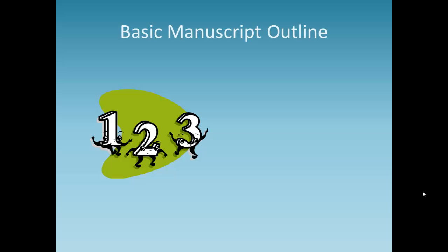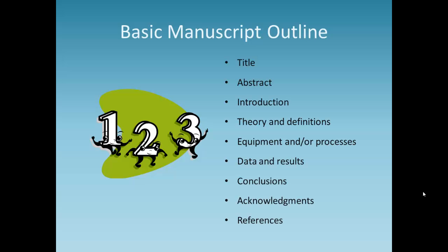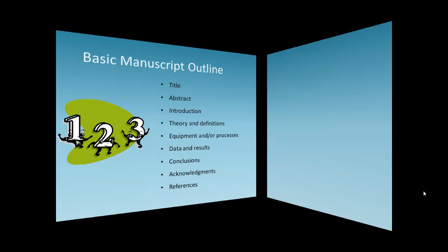A basic manuscript outline is another important part of planning your conference or journal paper. In your outline, you need to lay the groundwork for your title, abstract, introduction, theory and definitions, equipment and/or processes, data and results, conclusions, acknowledgments, and references.